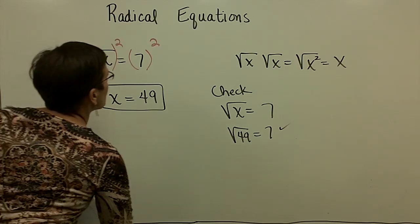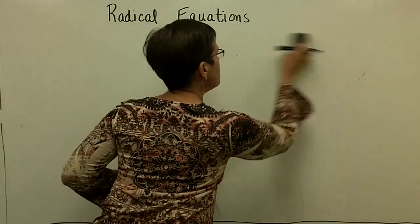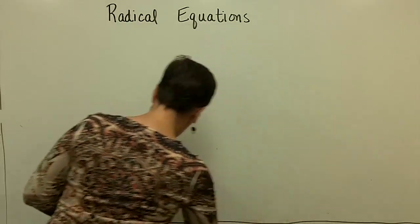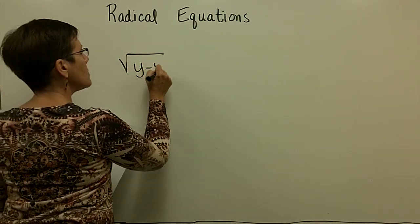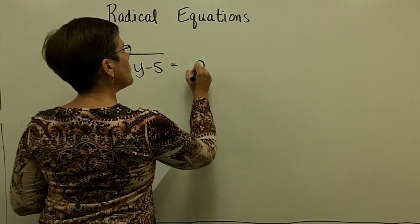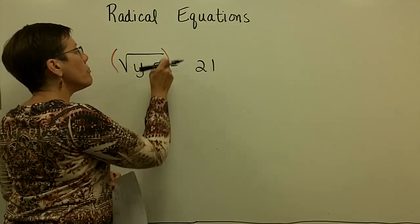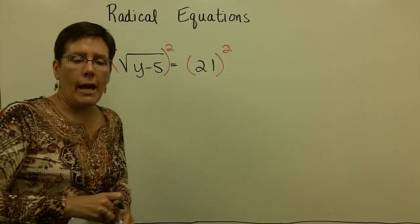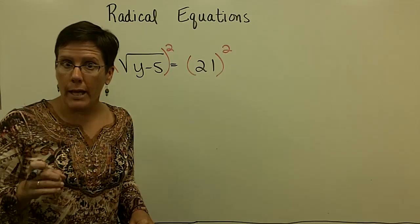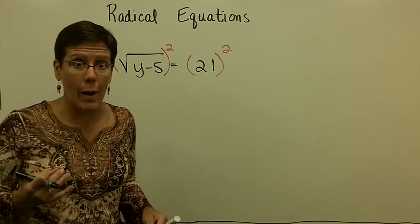Let's do another one where there's a binomial under the radical. So that one's a real simple one. So again, principle of squaring is going to be used. And so now what I have is the square root of y minus 5 equals 21. And I am going to square both sides in order that the expression under the radical or the radicand can come out from under the radical so that I can solve for y.